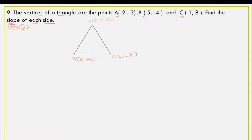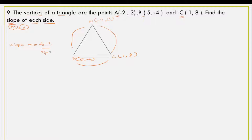The first slope is the slope of AB. We look at AB, BC, and AC. So the slope of AB uses the formula: slope M is equal to y2 minus y1 divided by x2 minus x1. So we will find the slope of AB.